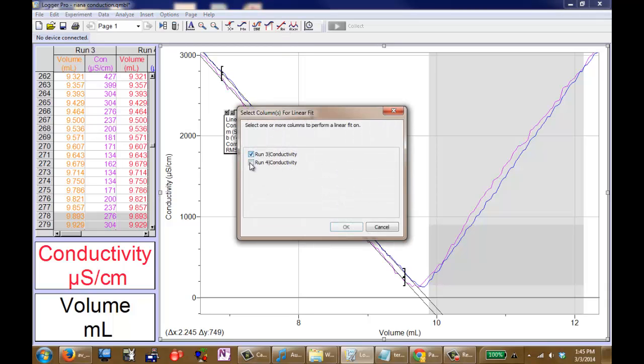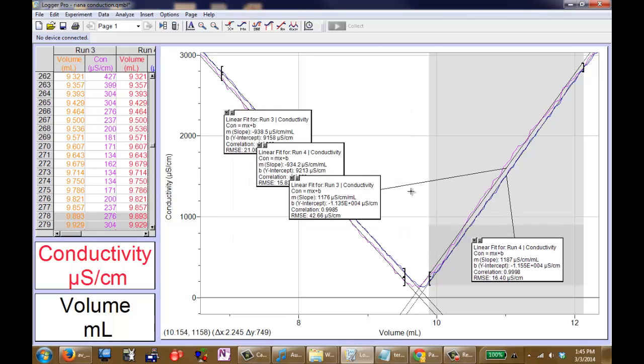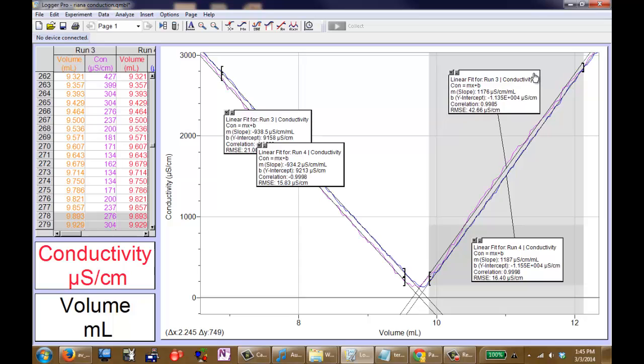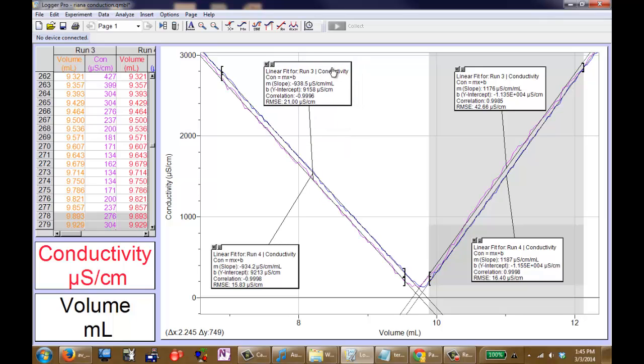We'll do this for both runs so you can see the comparison. The bottom will be run four and run three at the top. We did two other runs that you didn't see in the video that didn't work out that well, so we just use the data we have here.